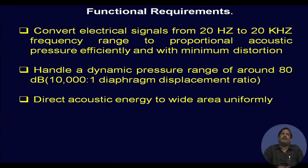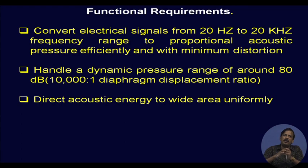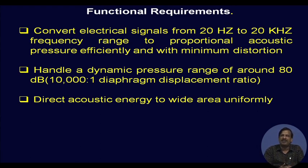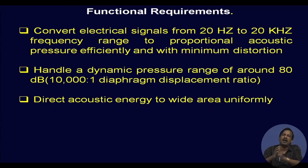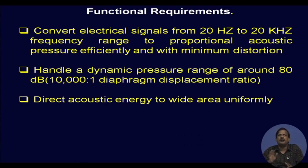What is the functional requirement of the loudspeaker? The requirement is that it should convert the electrical signal to an acoustical signal — converting electrical signal from the audio range of 20 Hz to 20 kHz to proportional acoustical pressure efficiently and with minimum distortion. Distortion should be very minimum.